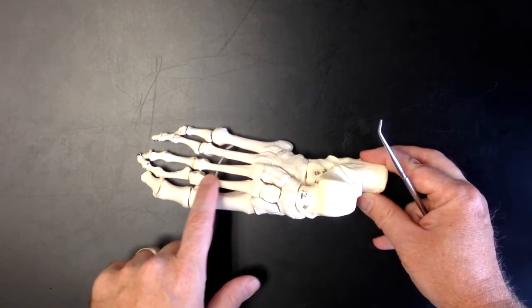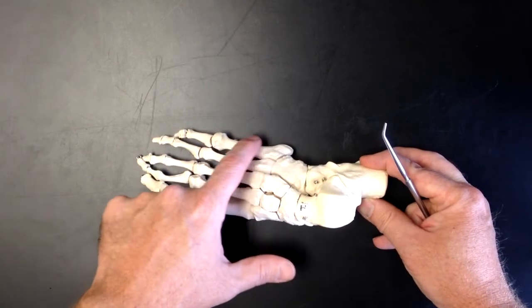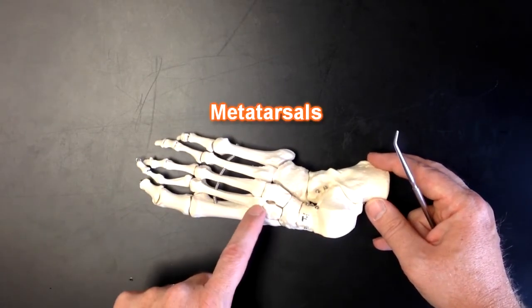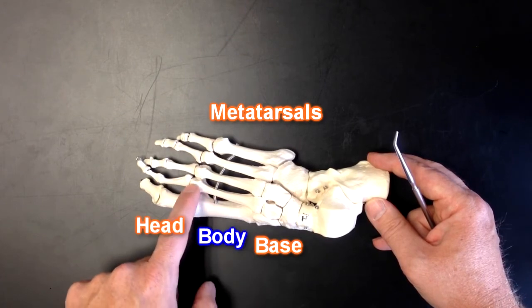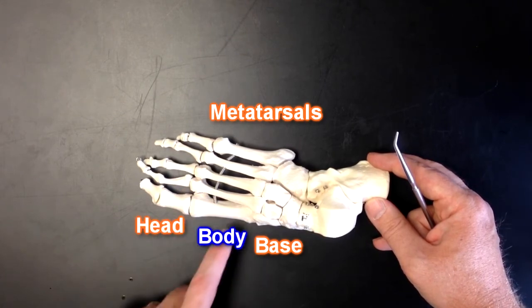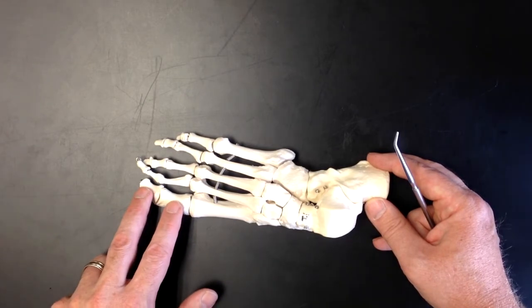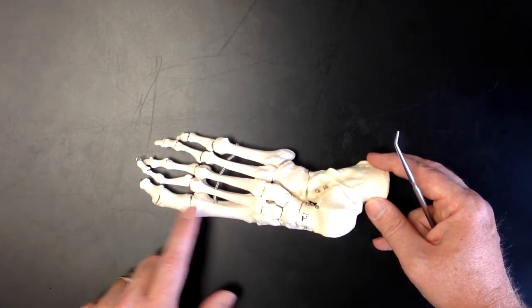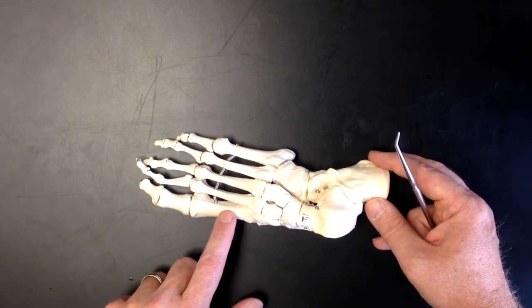These five bones right here are the metatarsals. Each one has a base, a body, and a head. The one associated with the big toe or the hallux. This is larger because a lot of force gets applied through this bone.